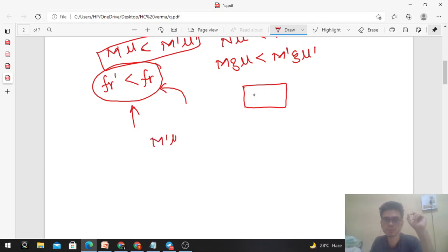M'μ' should be less than M into μ. This is the condition for the box to start sliding.